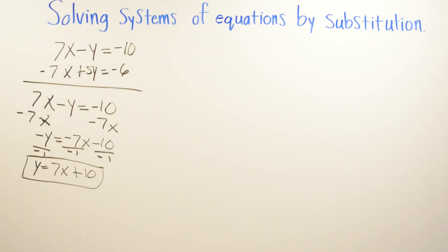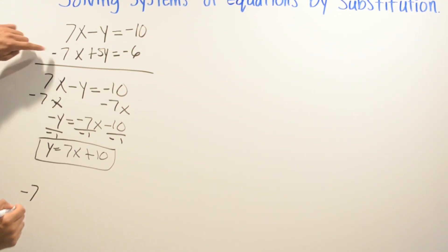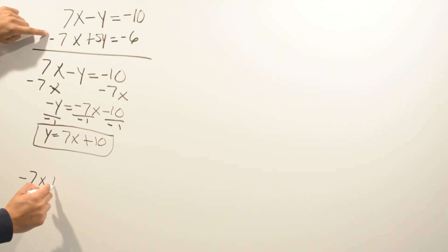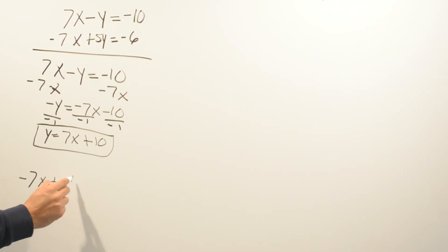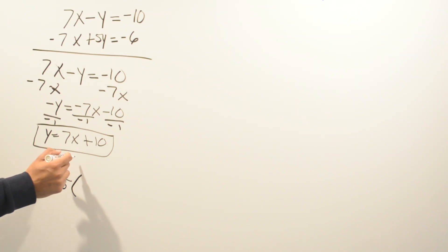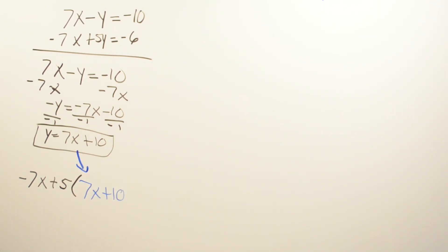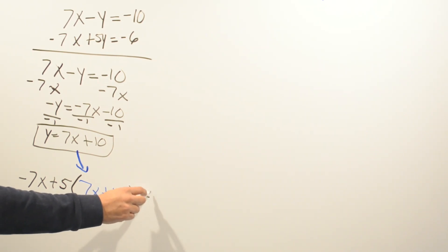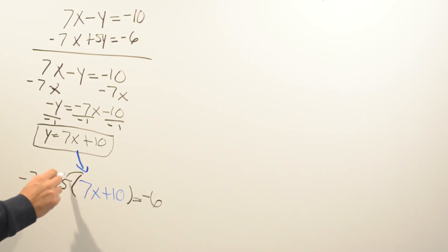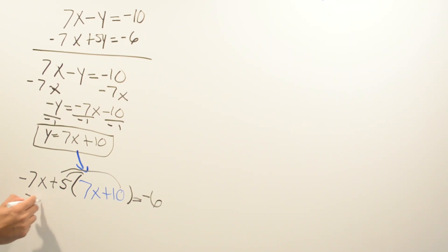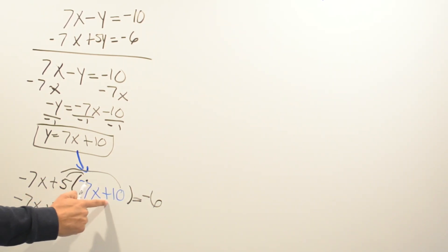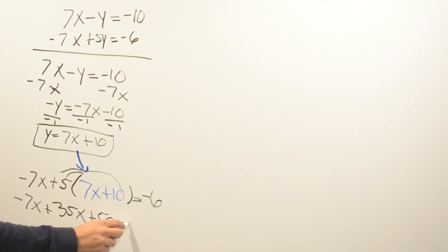Now that we have y by itself, we substitute into the second equation. We put negative 7x plus 5, and wherever we see y we place the expression in parentheses: (7x plus 10), equals negative 6. Distributing the 5: negative 7x plus positive 35x plus positive 50 equals negative 6.